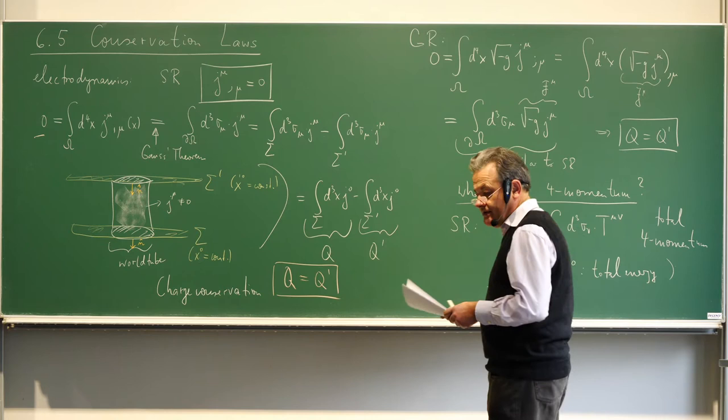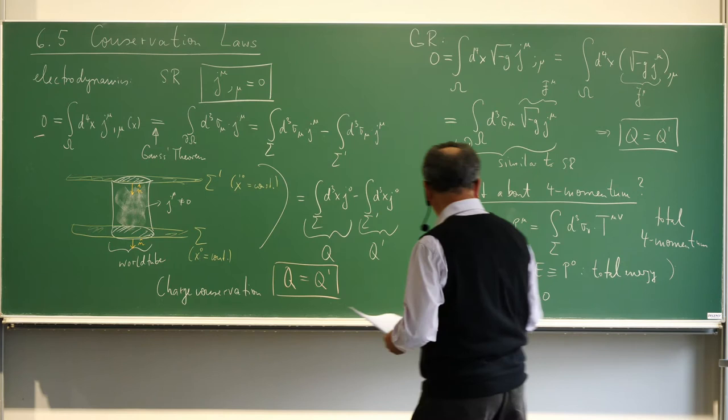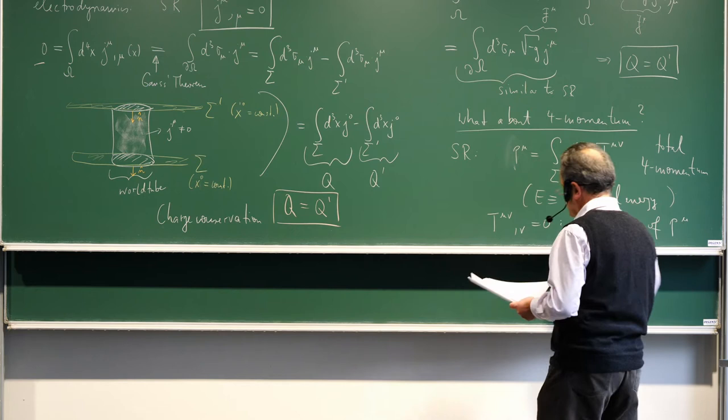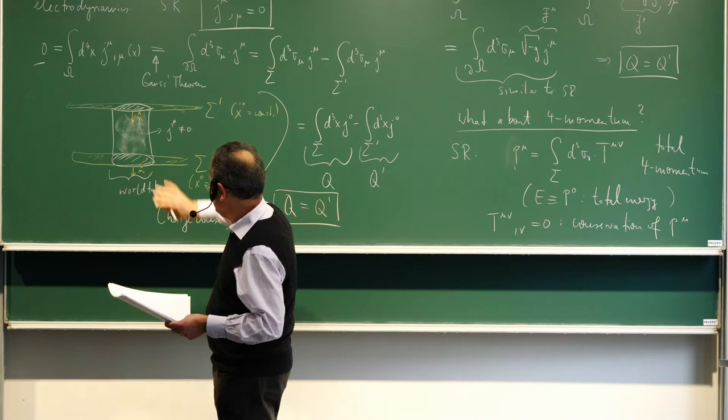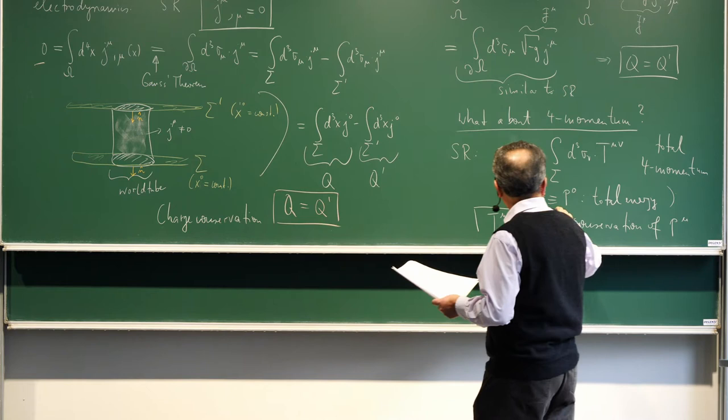In special relativity, T^mu nu_{,nu} = 0 is why we have conservation of four-momentum. You can apply an argument similar to the charge conservation case, just replacing j^mu_{,mu} = 0 with T^mu nu_{,nu} = 0. In general relativity, this is replaced by the covariant divergence T^mu nu_{;nu} = 0.